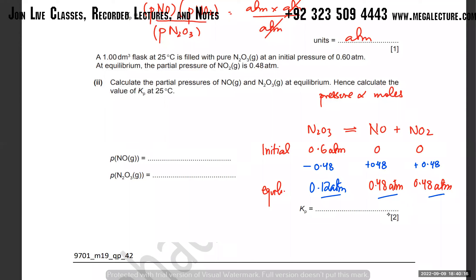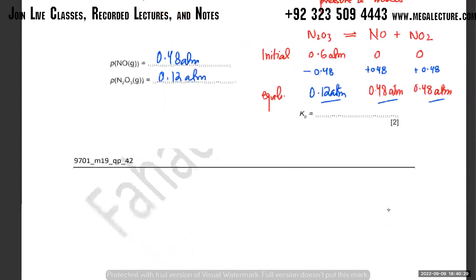So at equilibrium: P(NO) = 0.48 atm, P(N₂O₃) = 0.12 atm. Now you can substitute into the Kp expression.